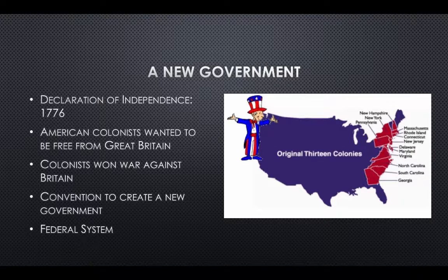A New Government. The United States was not created all at once. In 1776, the Declaration of Independence was written. It stated that American colonists wanted to be free from Great Britain. After the colonists fought and won a war against Britain, they had to decide what kind of government their new nation would have. In 1787, representatives from the states held a convention in Philadelphia, Pennsylvania.